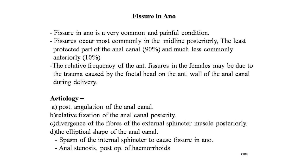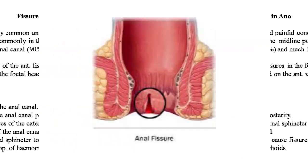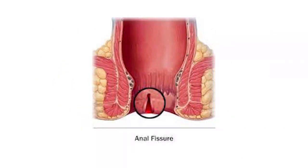Now the etiology. The predominantly posterior midline location of fissures has been explained by posterior angulation of the anal canal, relative fixation of the anal canal posteriorly, divergence of the fibers of the external sphincter muscles posteriorly, the elliptical shape of the anal canal, spasm of the internal sphincter, anal stenosis, and post-operative hemorrhoids. There is a picture on screen showing the anal fissure posteriorly at the 6 o'clock position.